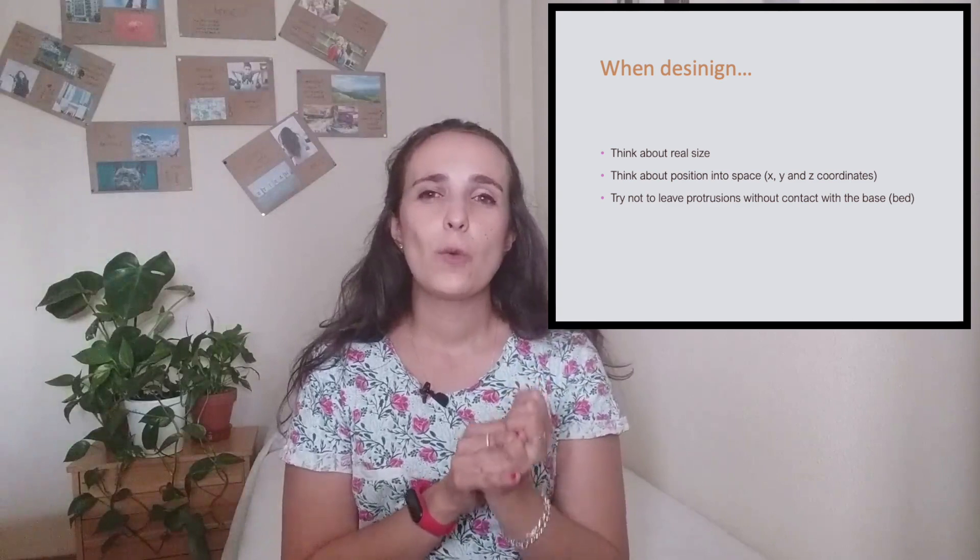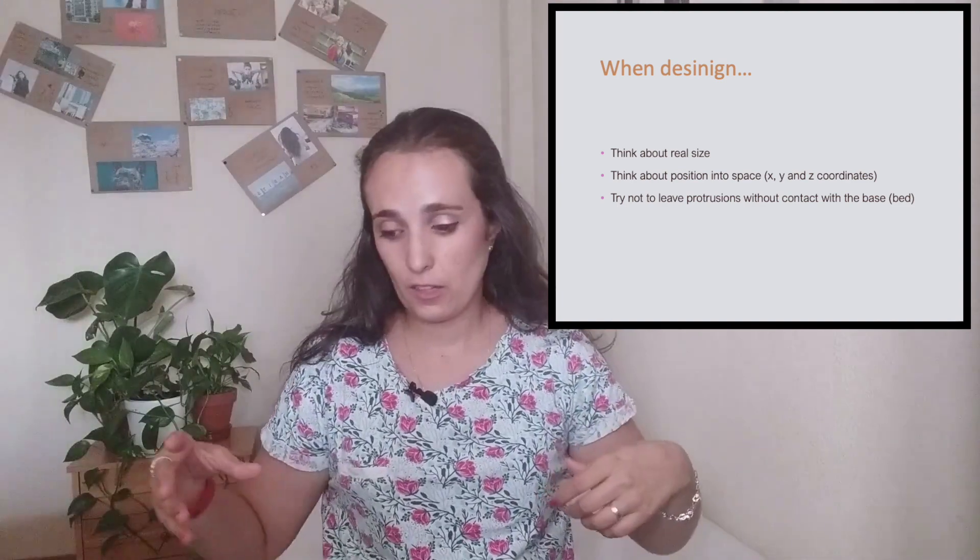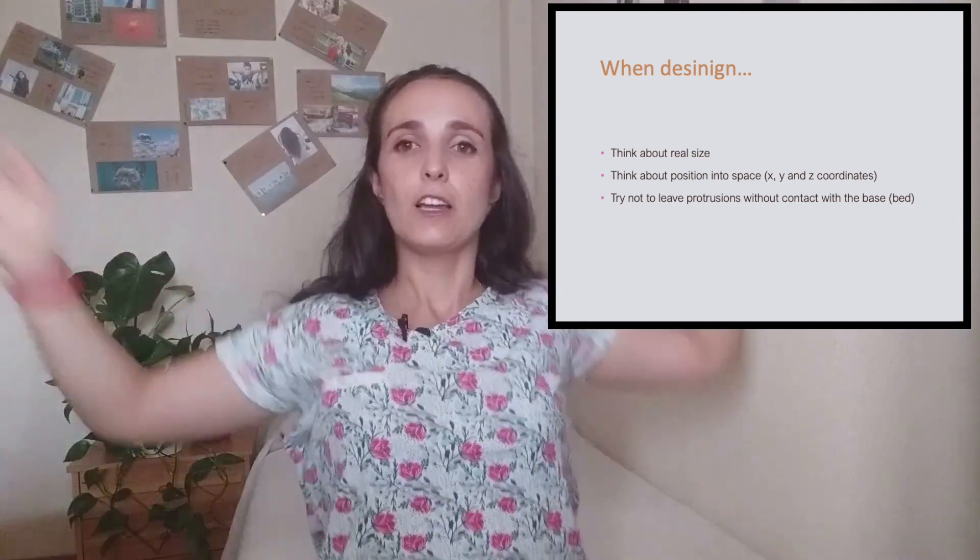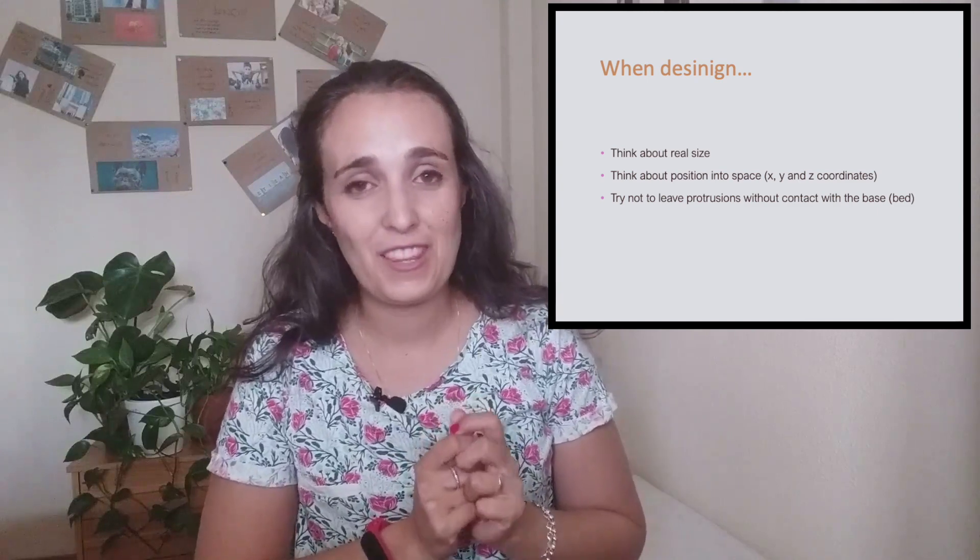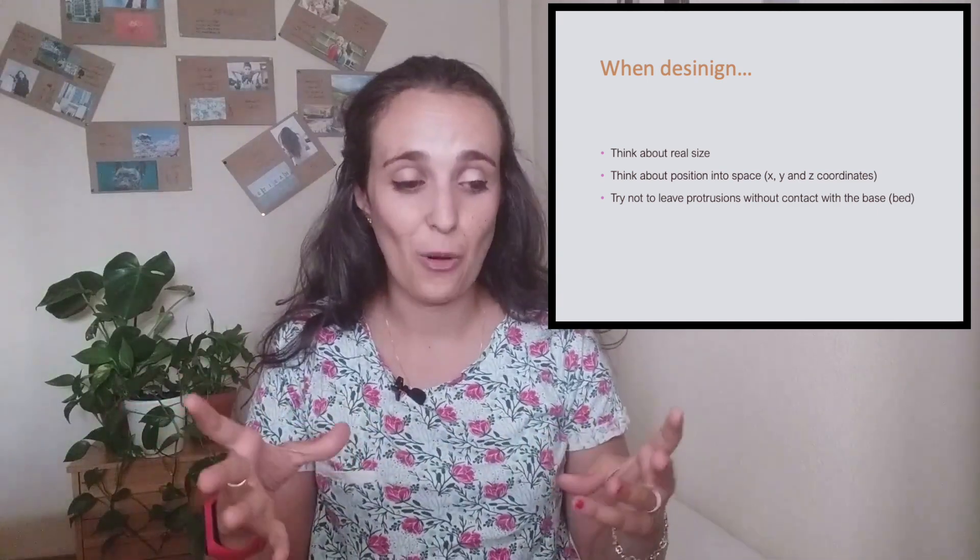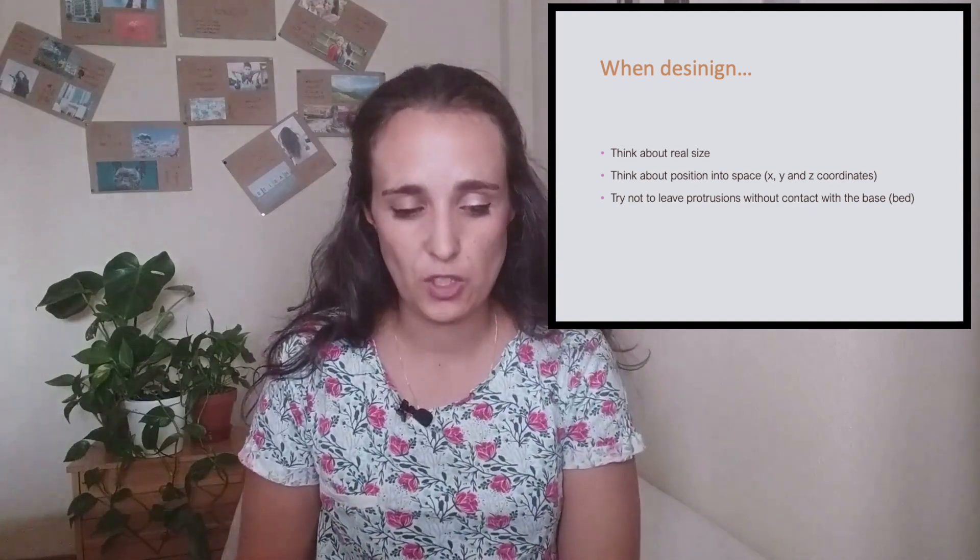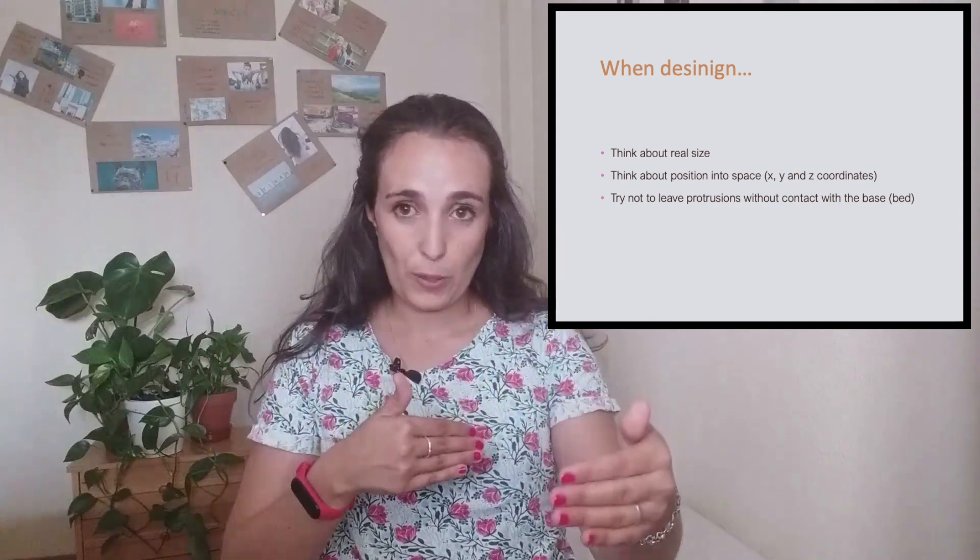When designing, we have to bear in mind 3 main things. We should think about the size. Because you can design something with the size of 1 meter, 10 meters. But then the base, the bed of your printer is 10 centimeters. So you won't be able to print that in your 3D printer. So when designing your object, please bear in mind your size. Then you have to think also about the positions. As I told you, we have depth, width, and height.